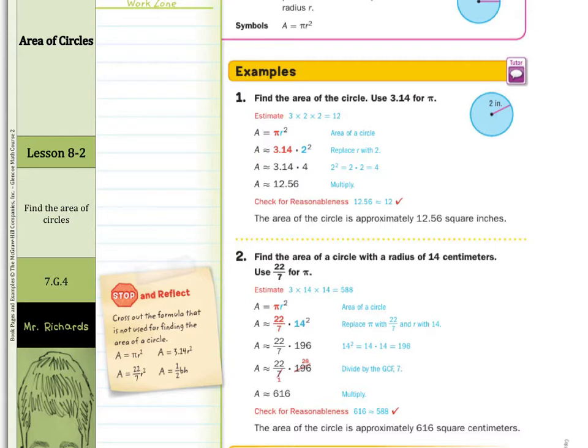And if we stop and reflect here, cross out the formula that is not used for finding the area of a circle. Well, we have area equals pi r squared. That looks good. Area equals 3.14 r squared. That looks good. Area equals 22 sevenths r squared. That looks good. Area equals one half base times height. Well, that would be a triangle, not a circle. So we can cross that one out.